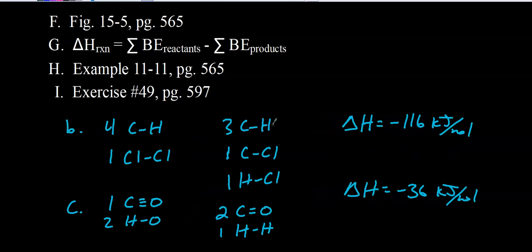For letter B, in the reactants we have one methane molecule giving four C–H single bonds, and one chlorine molecule giving one Cl–Cl bond. In the products, we have three C–H bonds in the chloromethane molecule, one C–Cl bond, and one H–Cl bond in the hydrogen chloride molecule. Reactants minus products gives us negative 116 kilojoules per mole.